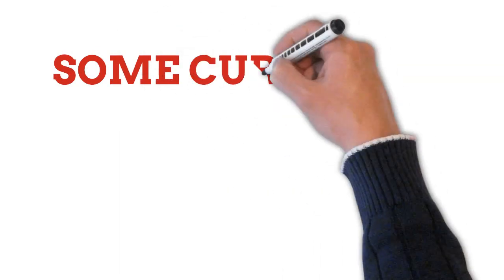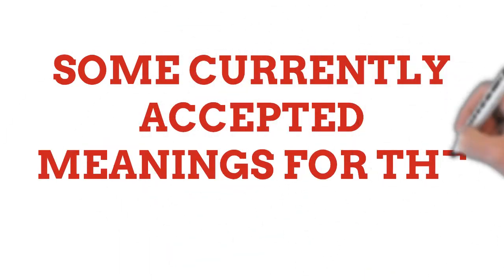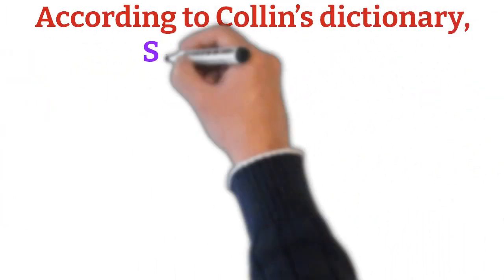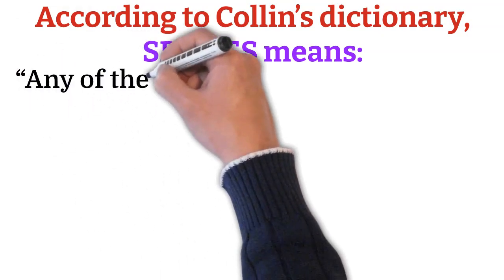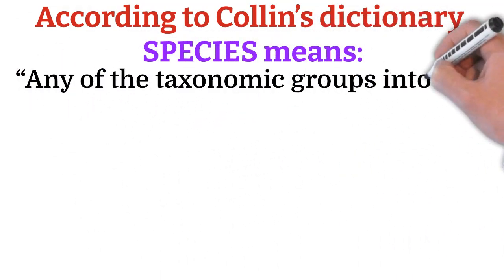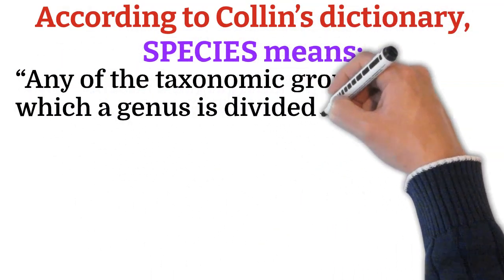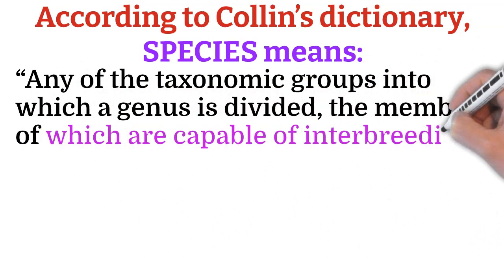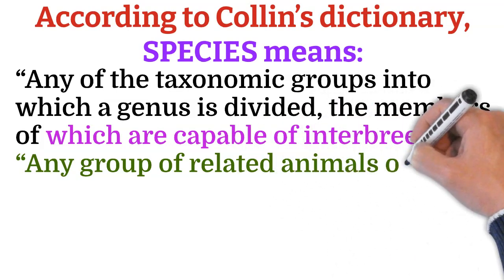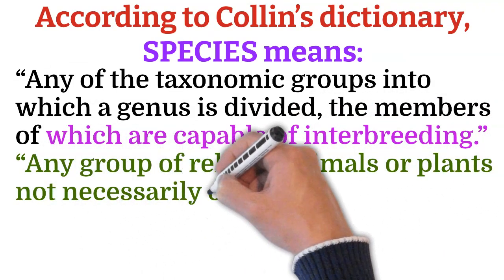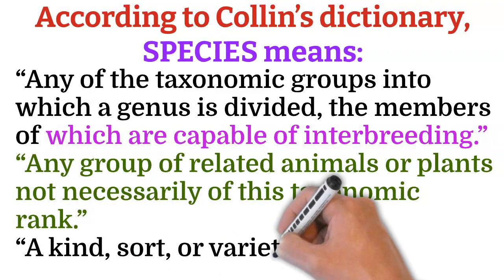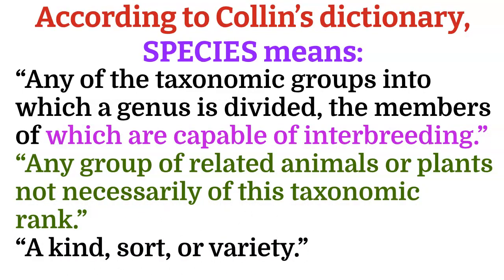Let's discuss some of the currently accepted meanings for the word species. According to Collins Dictionary, species means any of the taxonomic groups into which a genus is divided, the members of which are capable of interbreeding; or any group of related animals or plants not necessarily of this taxonomic rank — a kind, sort, or variety.